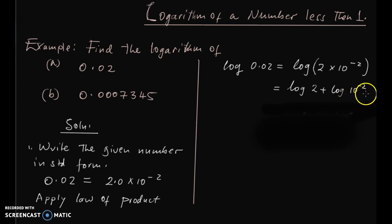If you apply the law here, we have this is the same as logarithm of 2 plus logarithm of 10 power negative 2. Now as I said before, if we have negative exponent we represent it as bar. Logarithm of 10 power negative 2, we are going to drop this negative 2 here. This is going to be bar 2.